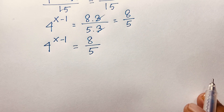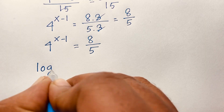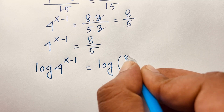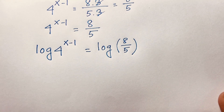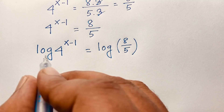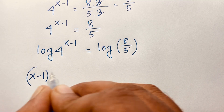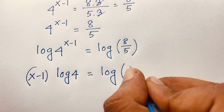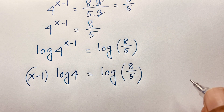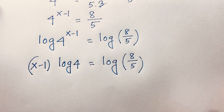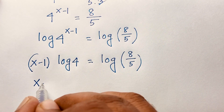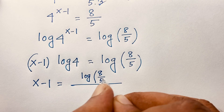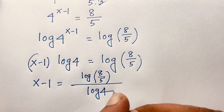Now to find the value of x, I apply logarithm to both sides: log of 4 to the power x minus 1 equals log of 8 over 5. By the logarithm power rule, the exponent x minus 1 moves to the front, giving x minus 1 times log 4 equals log of 8 over 5. Dividing both sides by log 4 gives x minus 1 equals log(8/5) over log 4.